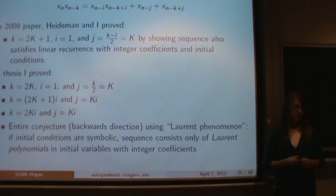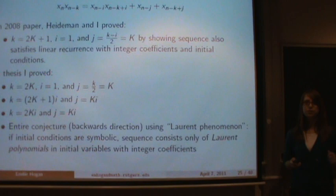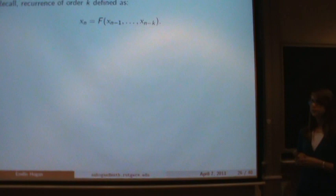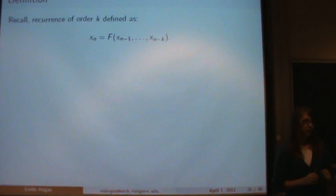So this is all I want to say about the surprising integer sequences, and I now want to move into surprising rational sequences. Recall that at the beginning, I defined a recurrence like this: a recurrence of order k where x_n is equal to some function of the previous values. And now instead, I want to generalize this a bit.